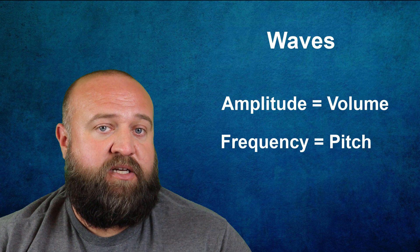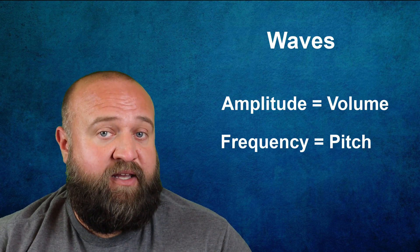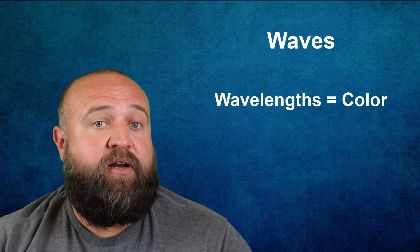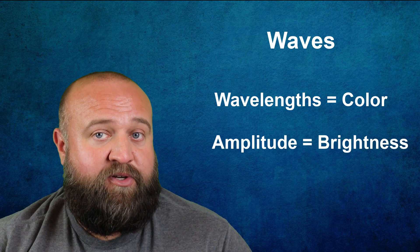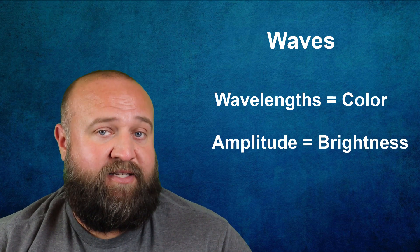Likewise, when it comes to vision, differences in the wavelength of the light entering our eyes helps us to see color, and amplitude is how we can determine the brightness of an object.